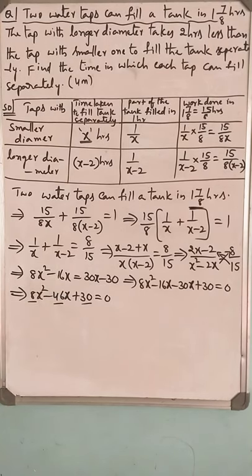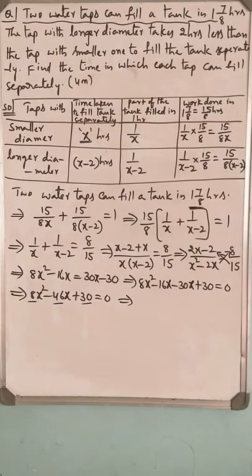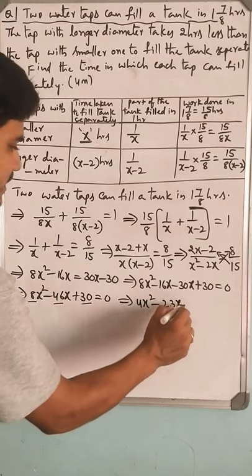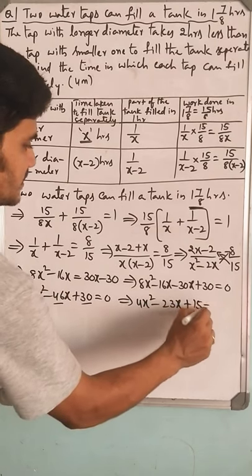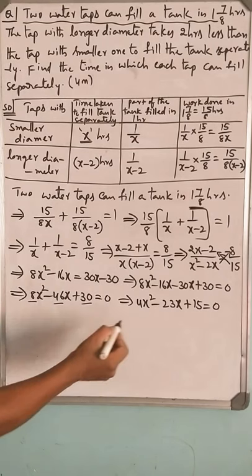As all coefficients are multiples of 2, you can reduce the equation by dividing by 2: 4x² - 23x + 15 equals 0. Here we can go for factorization.